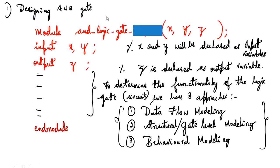For designing the AND gate, we first write the module name. I consider the module name as AND_logic_gate with inputs X, Y and output Z. In the logical diagram, X and Y are the inputs and Z is the output. X and Y are declared as input variables and Z is declared as the output variable.